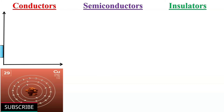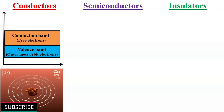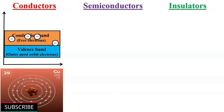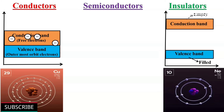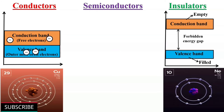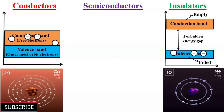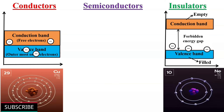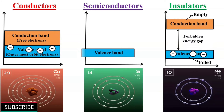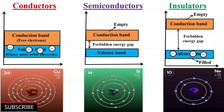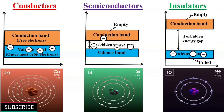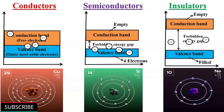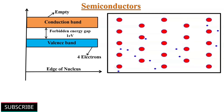In terms of energy bands, conductors have their valence and conduction bands overlapping each other, so valence electrons can move easily to the conduction band. Insulators have a large forbidden energy gap between their conduction and valence bands, so it is not possible for valence electrons to enter the conduction band. Semiconductors have a small forbidden energy gap between their valence and conduction bands, so some valence electrons can enter the conduction band, meaning semiconductors have very few free electrons at room temperature and pass a tiny current.